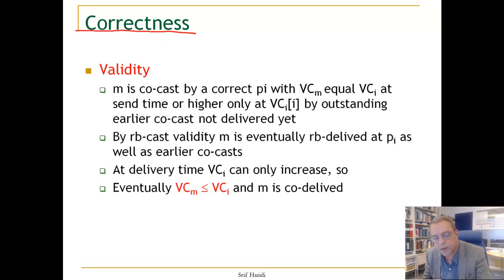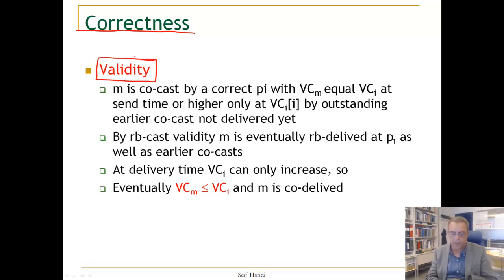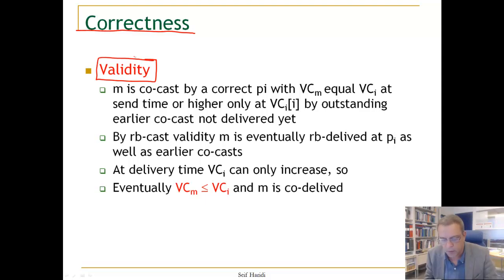Now let us look to the correctness of the algorithm, and we will do it by looking first to the validity property. Do you remember the validity property? If a sender causally broadcasts a message, it will eventually deliver that message. So we take it step by step.